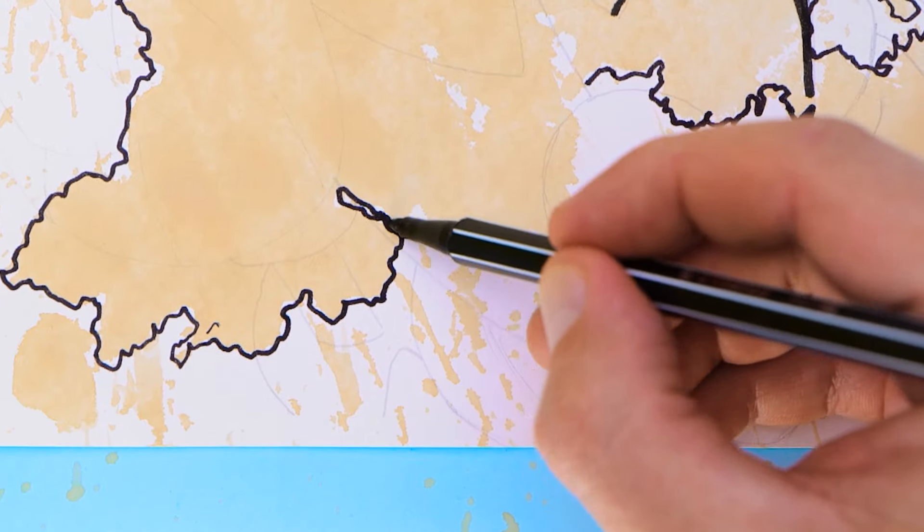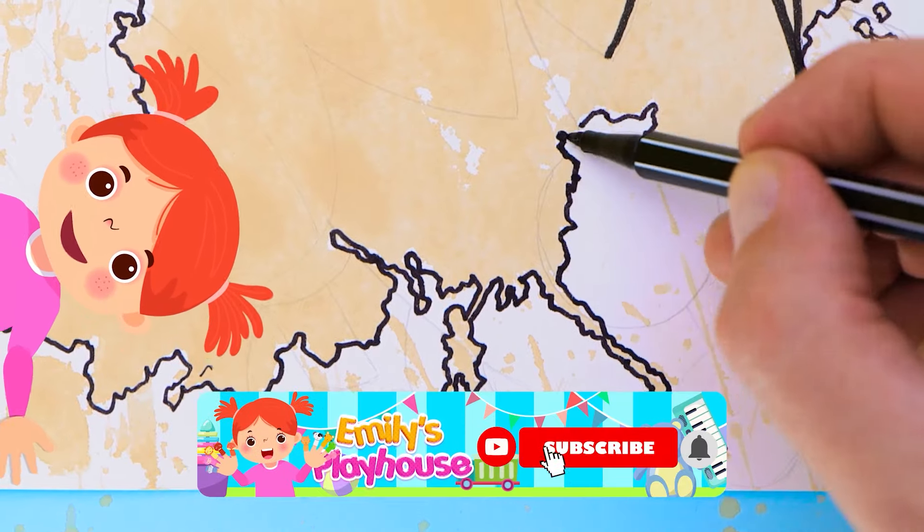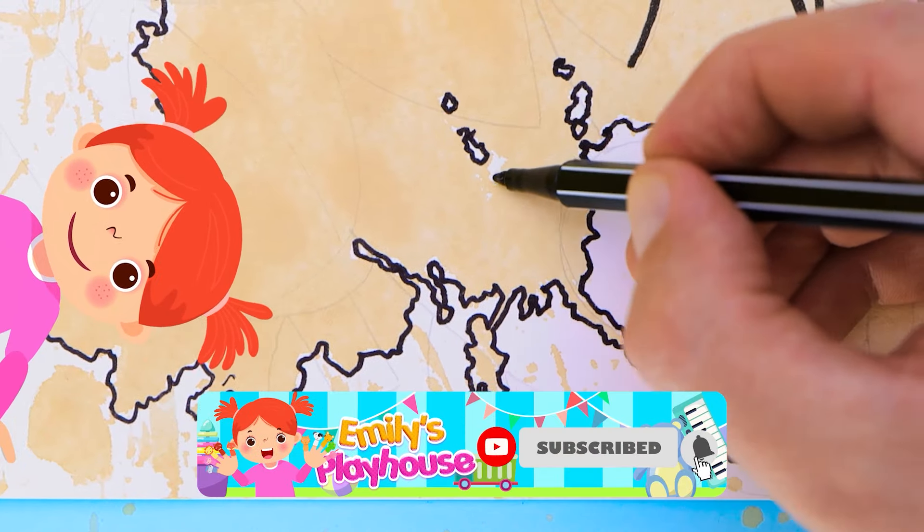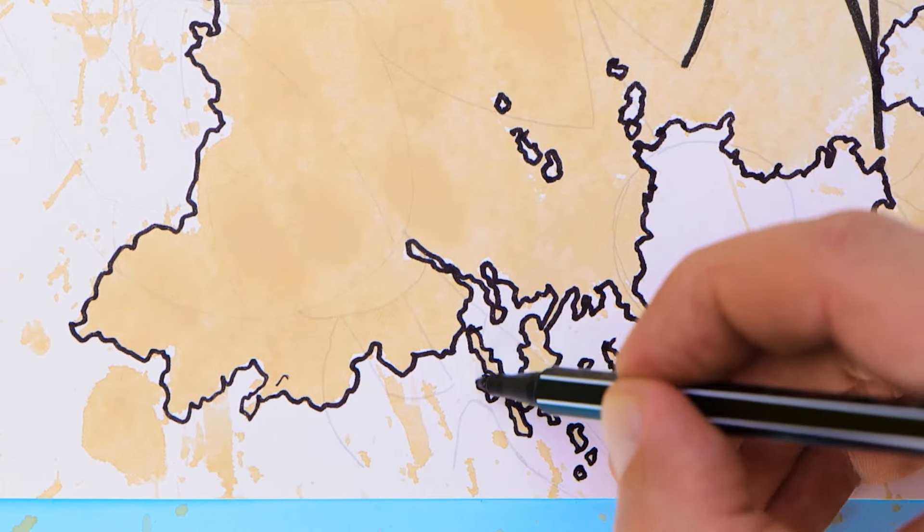What do you think, Emily? It looks amazing! It reminds me of a map with countries and little islands everywhere. Oh, you're right. It does look like a map. But that will change when we start coloring it.